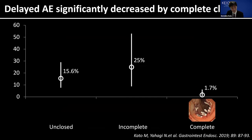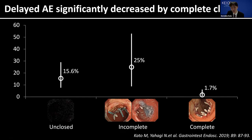We evaluated the proportion of delayed adverse events and found that in patients in whom complete mucosal closure was achieved, the delayed adverse event rate was only 1.7%, which is much lower than patients with unclosed or incomplete closures. It is important not only to try to close the defect, but also to actually achieve complete closure.